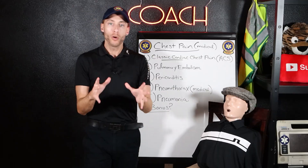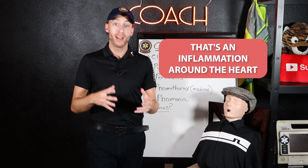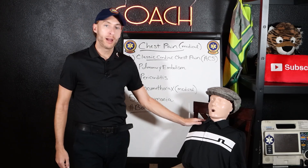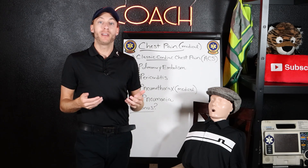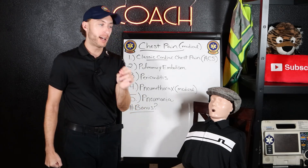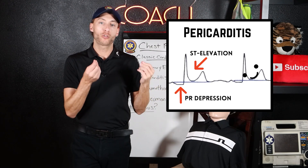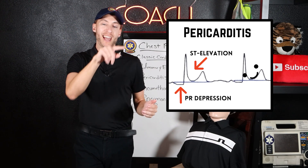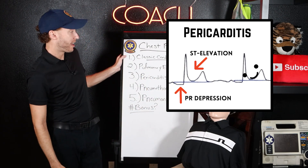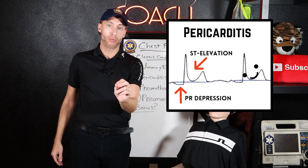The third thing is pericarditis — that's an inflammation around the heart, usually due to infection. The pericardium is inflamed. With pericarditis, if you lean the patient back, they're in immense pain; if you sit them forward, they feel better. The pain is usually sharp and knife-like with pericarditis, whereas classic cardiac chest pain is crushing and dull. On a 12-lead EKG, you're going to see PR depression and a smiling upstroke — watch for widespread ST elevation and PR depression. That's your pericarditis.